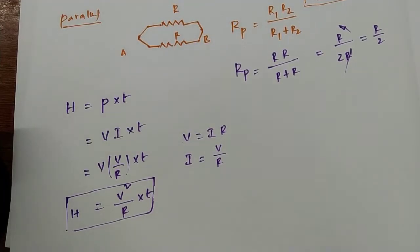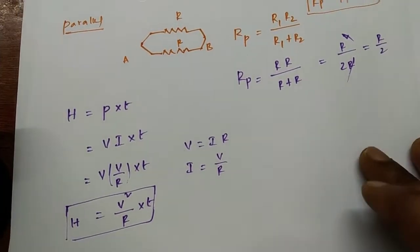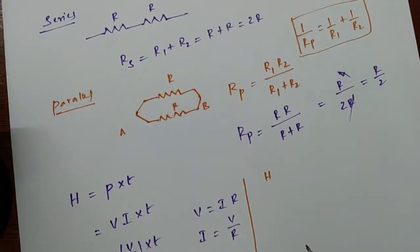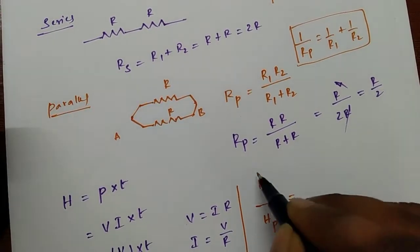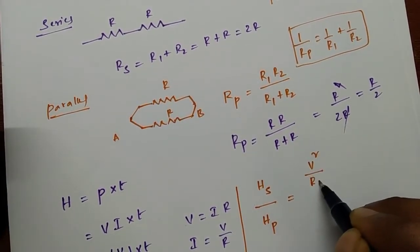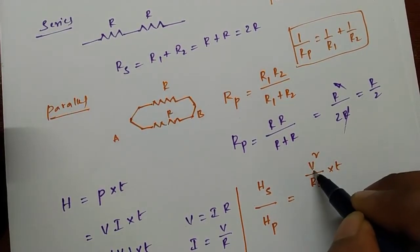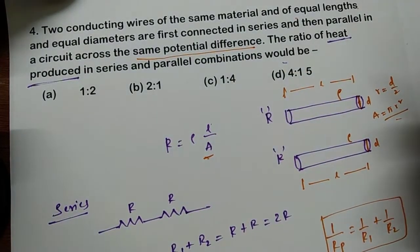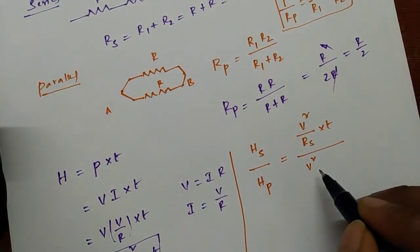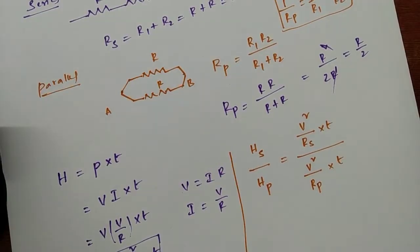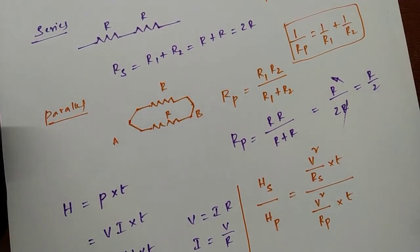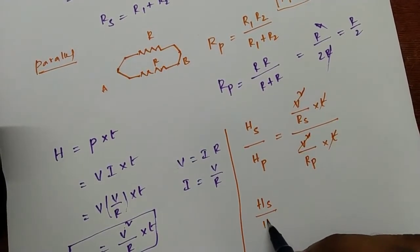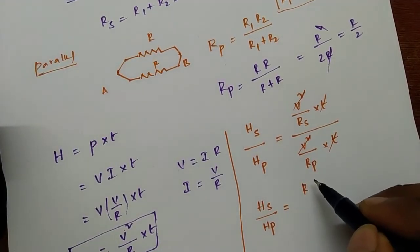Now we apply this formula — one for the series case and one for the parallel case. Heat produced in series divided by heat produced in parallel equals (V squared divided by R_series times T) divided by (V squared divided by R_parallel times T). Since the same potential difference V is applied in both cases, and time T is the same, V squared and T cancel out. So the ratio H_series to H_parallel equals R_parallel divided by R_series.